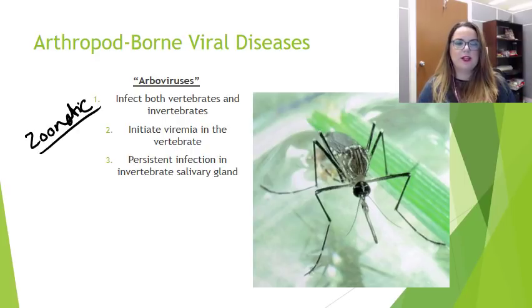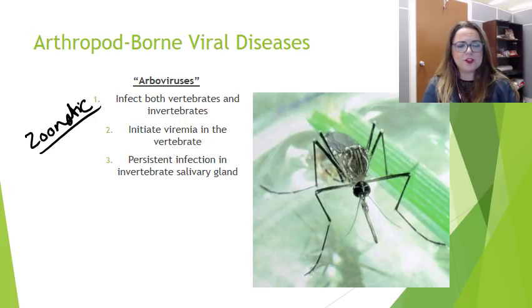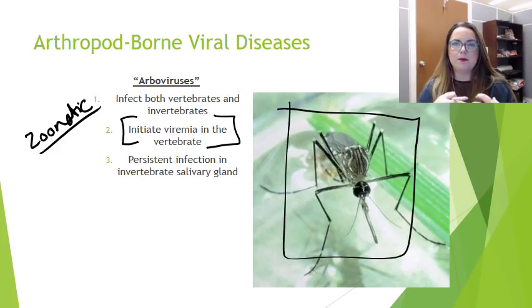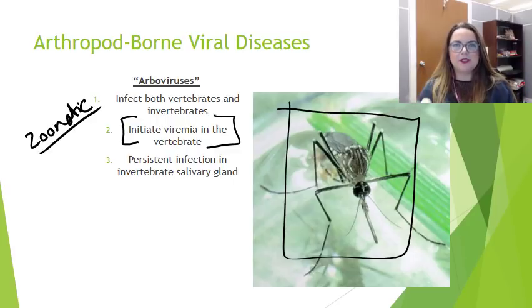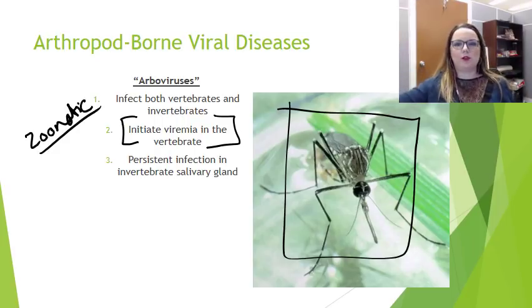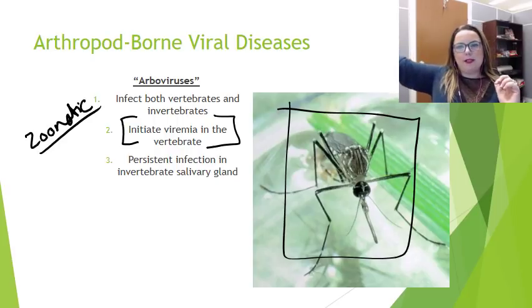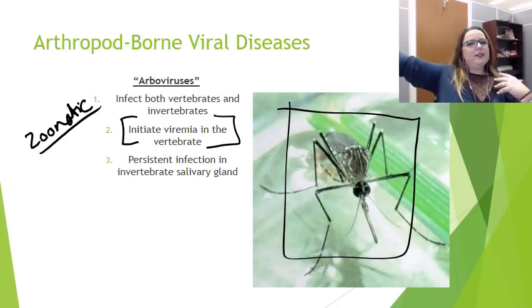In the vertebrate and the invertebrate, it's going to have different things it needs to accomplish. First, it needs to initiate viremia in the vertebrate — in us — because otherwise it won't spread. The mosquito is going to take a blood meal from the host. It's not that the mosquito takes my blood and gives it directly to someone else. Instead, what happens is that the mosquito itself needs to become persistently and productively infected in its salivary gland.